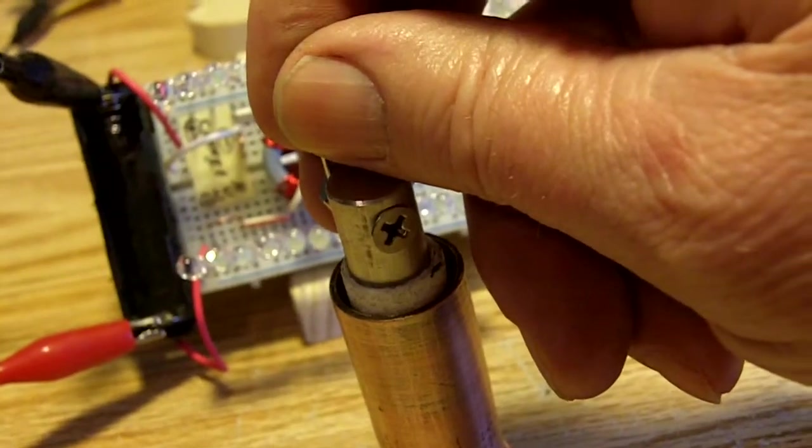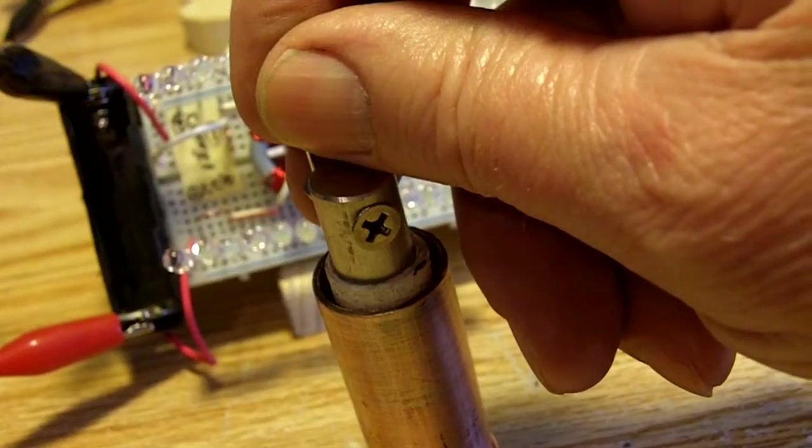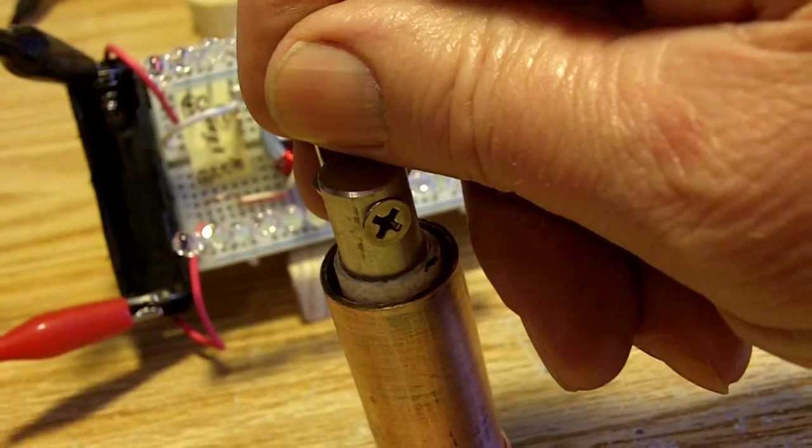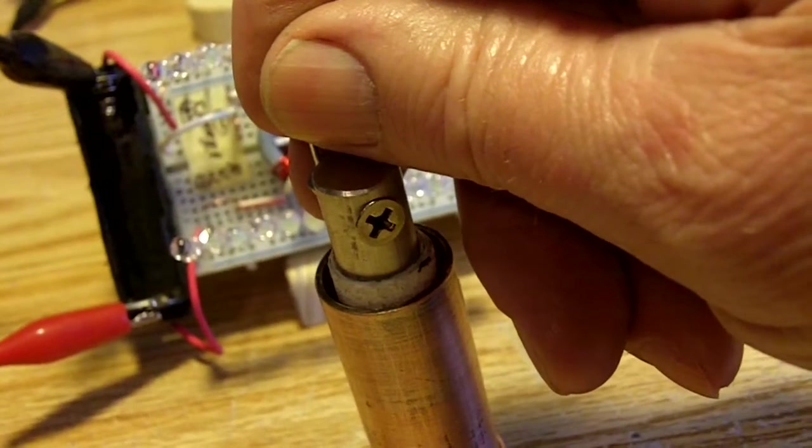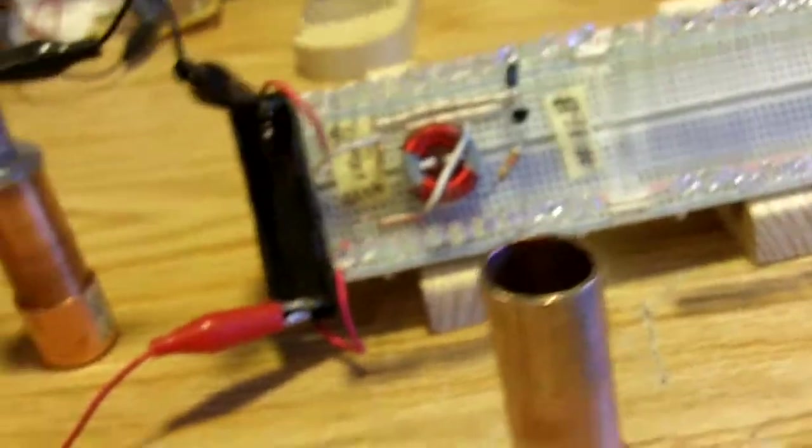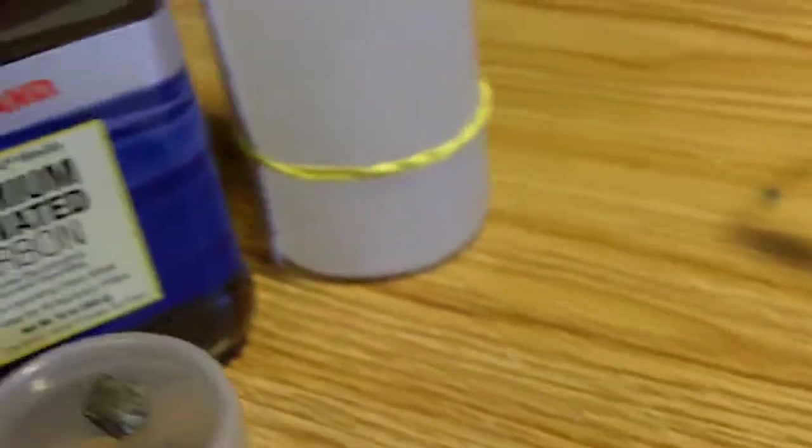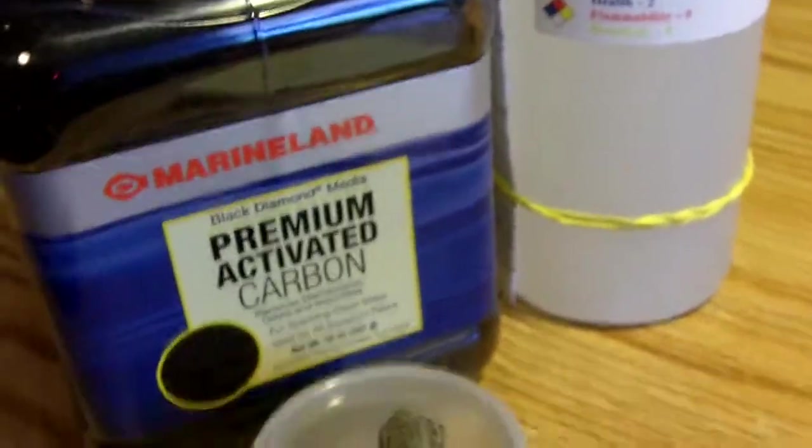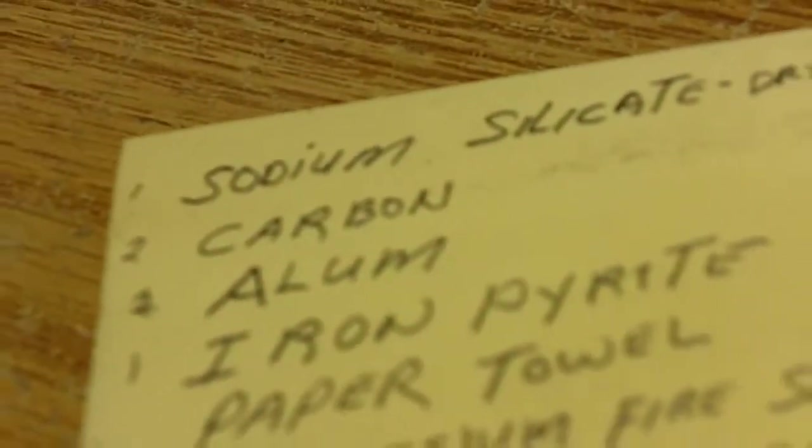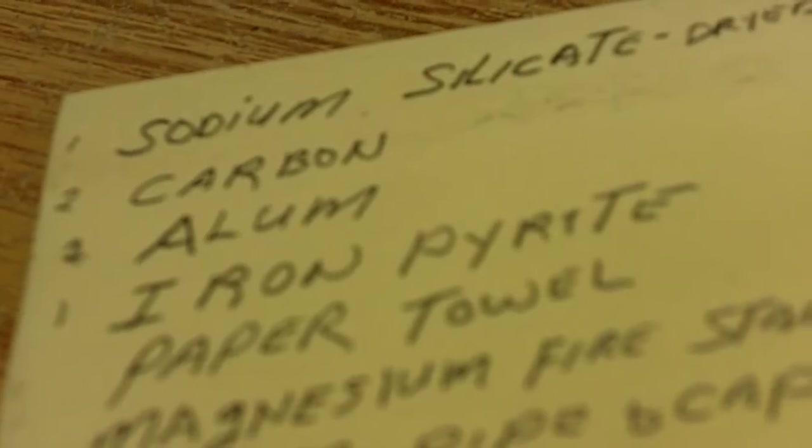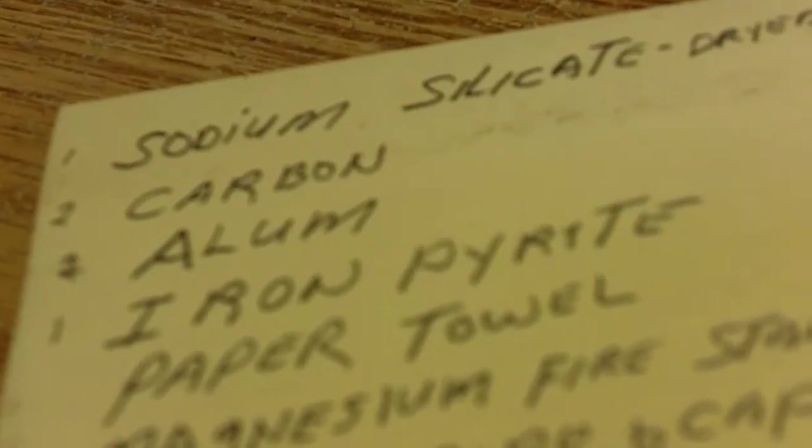When I'm ready to fill it with the filler, I take a little spoon and start adding the chemical and tap it and shake it until I get it full. I have the carbon and alum, silicate, and iron pyrite. In the mixture I use, the sodium silicate dried and pounded up, I use one part of that, two parts of carbon, two parts of alum, and one part of iron pyrite.